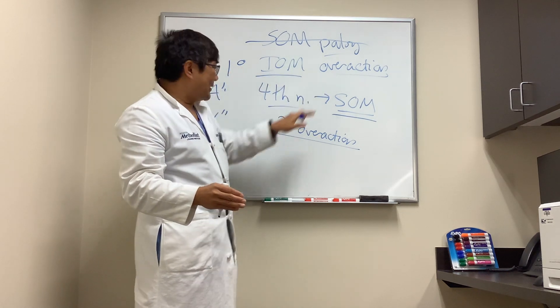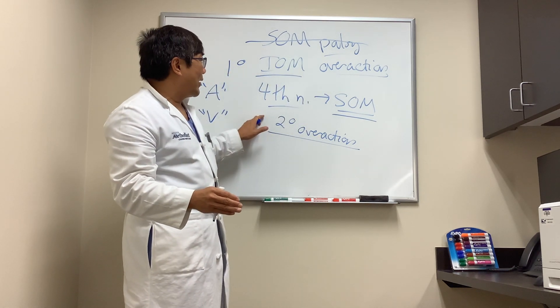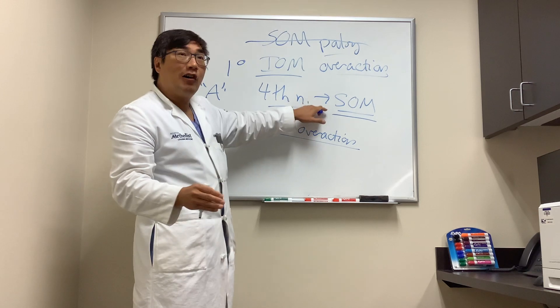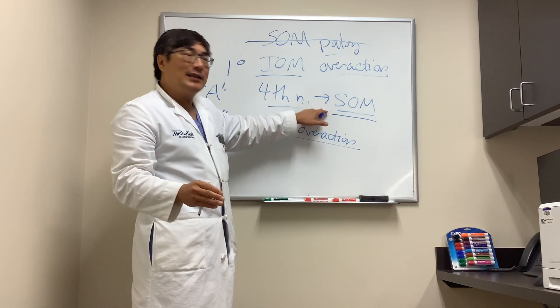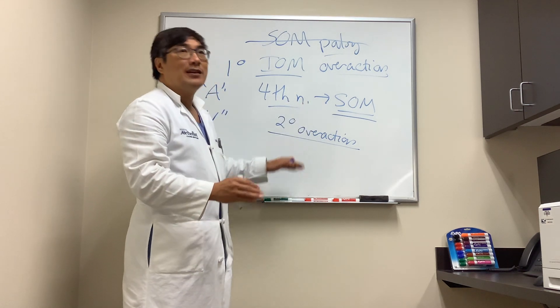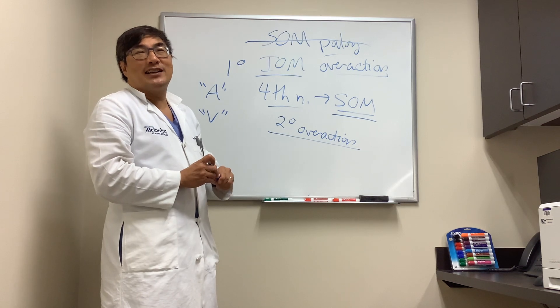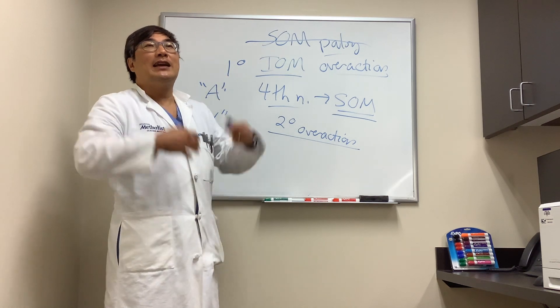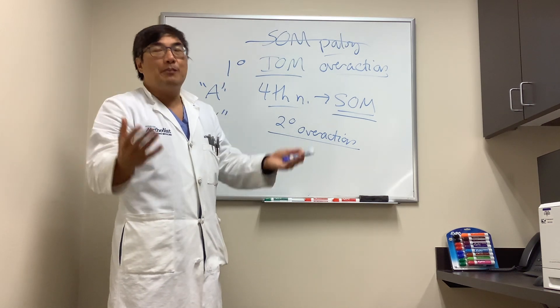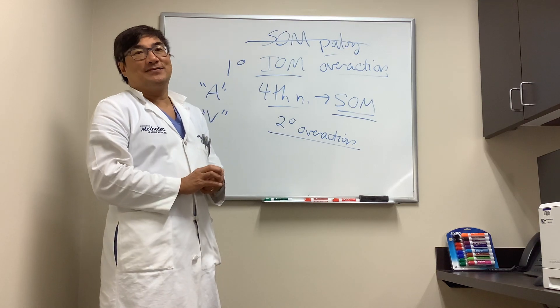So to summarize: inferior oblique overaction that is secondary is a consequence of palsy of the superior oblique muscle. It will appear that the inferior oblique muscle is overacting, when in reality it's just an unopposed antagonist — it's not true overaction.